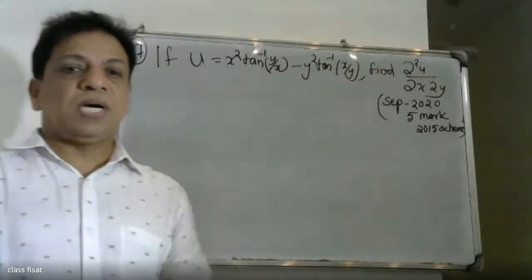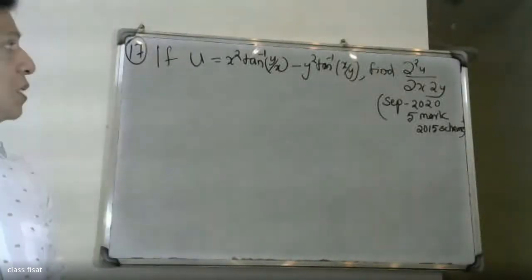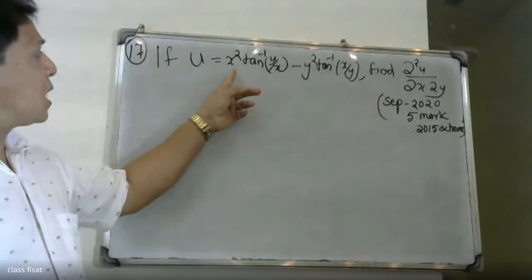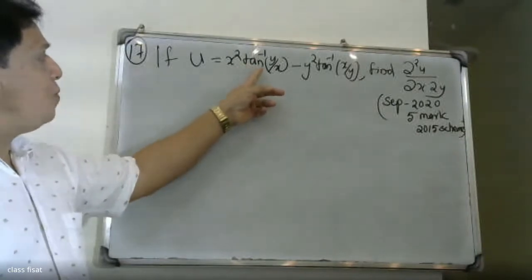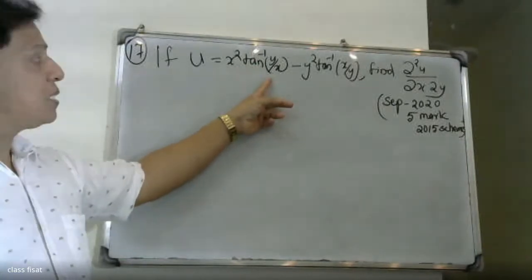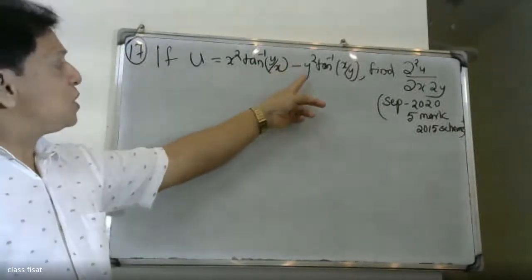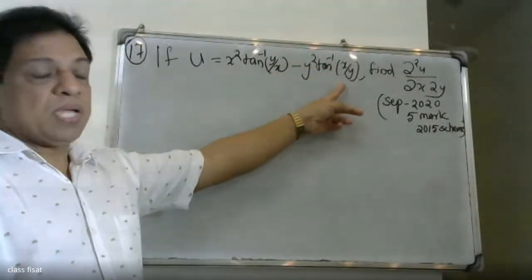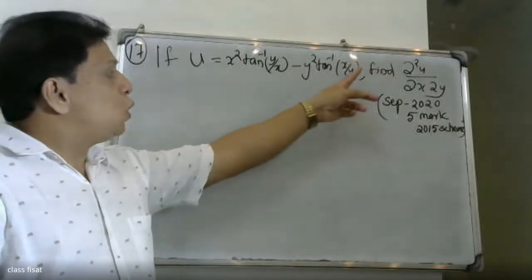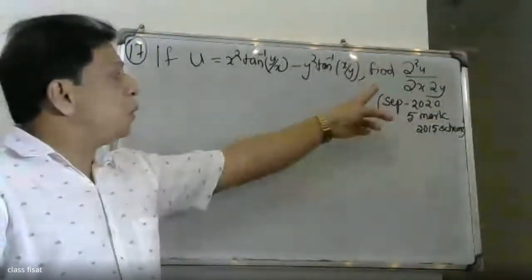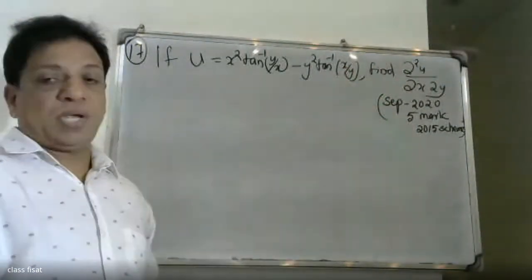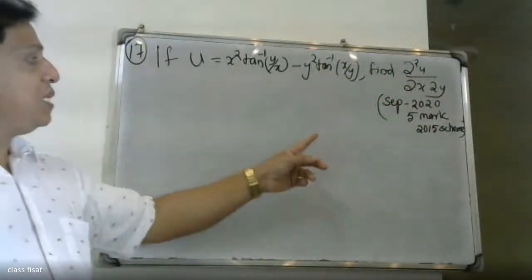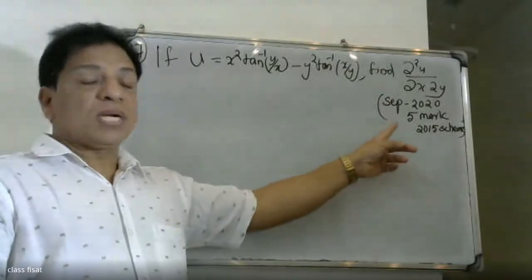Good morning students. I had a university question. If u is equal to x square tan inverse y by x minus y square tan inverse x by y, find dou square u by dou x into dou y. In September 28th, we have a 5 mark question.